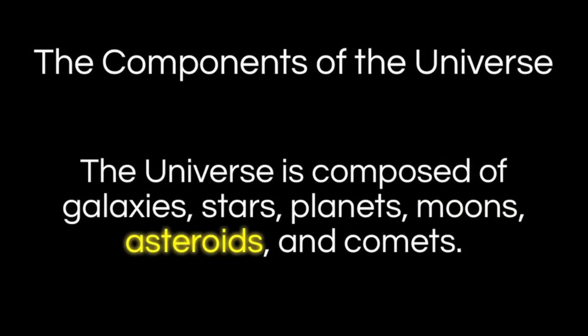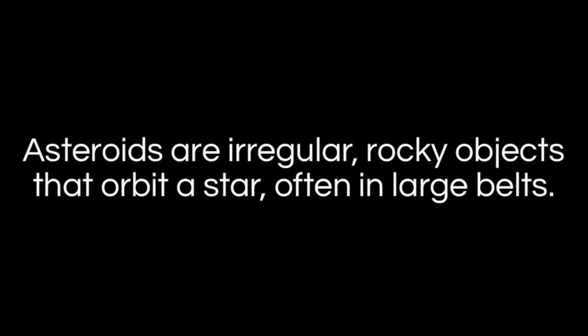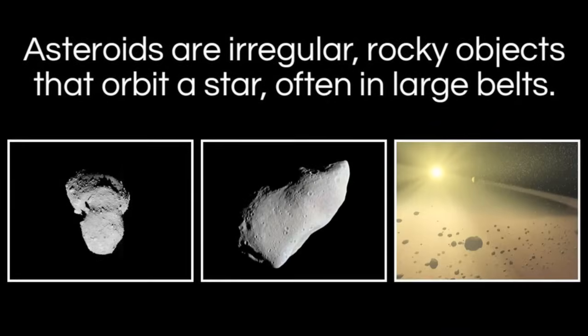What about asteroids? An asteroid is generally smaller, though there are some very large ones, and they're not close to being spheres — they're irregular and rocky. They orbit a star, and they often complete that orbit with many other asteroids in large belts. On the left and center you see photographs of actual asteroids from our solar system, and on the right is a depiction of one of the asteroid belts — specifically the one between Mars and Jupiter, which separates the inner planets from the outer planets.